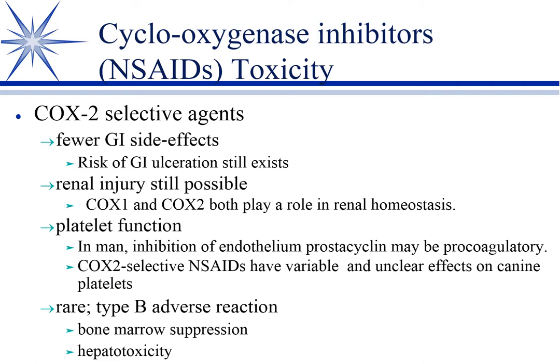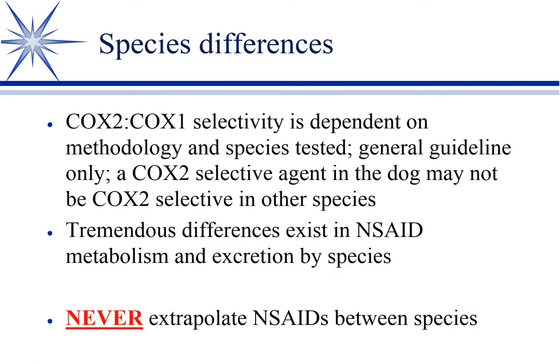We still have the adverse reactions — bone marrow suppression and hepatotoxicity — with hepatotoxicity being the more common concern. Before getting into individual NSAIDs, note that this COX selectivity is dependent on the methodology and, most importantly, the species tested. A drug that is COX-2 selective in the dog is not necessarily COX-2 selective in the cat, the horse, or the cow — it's species dependent.